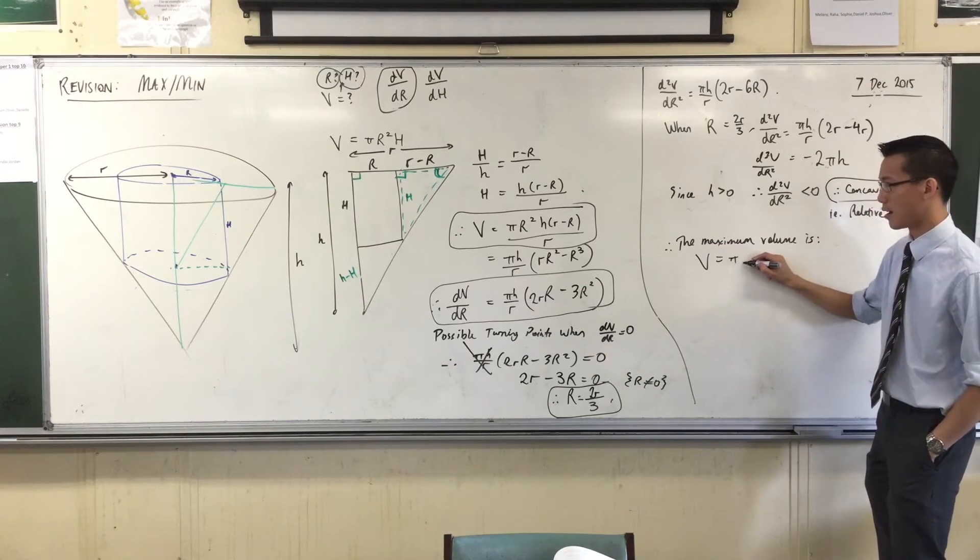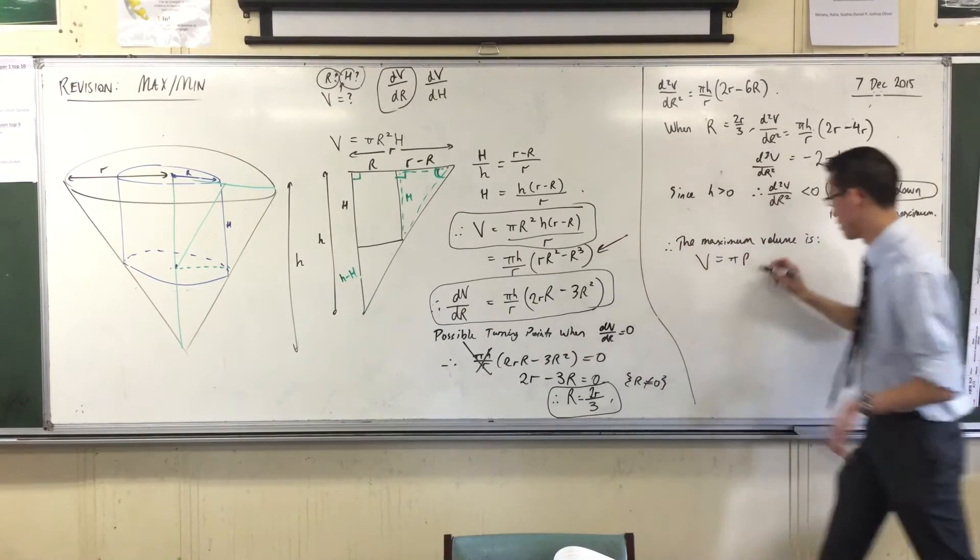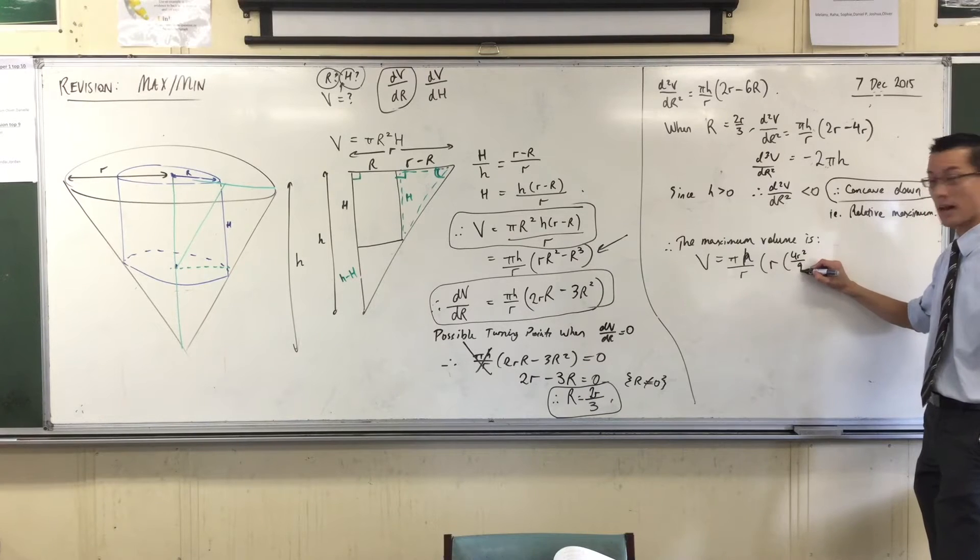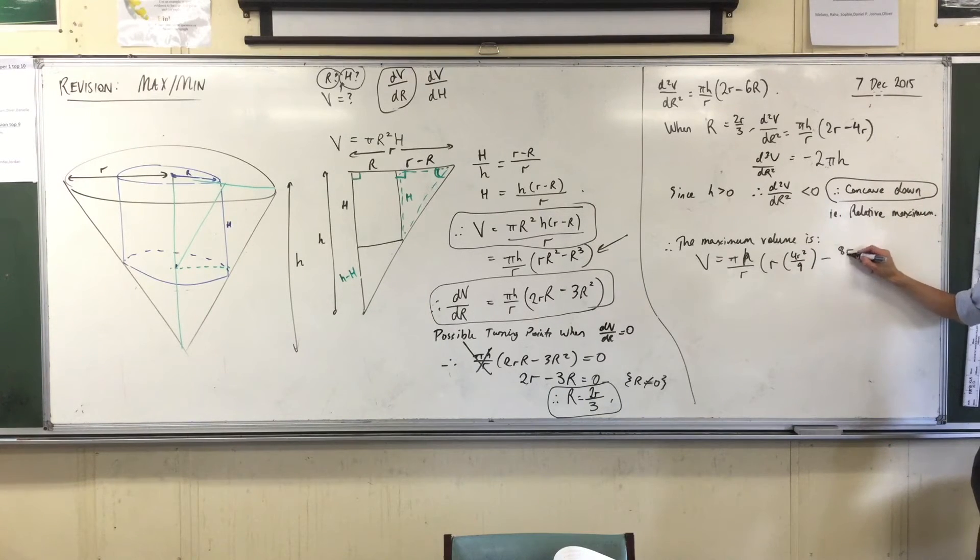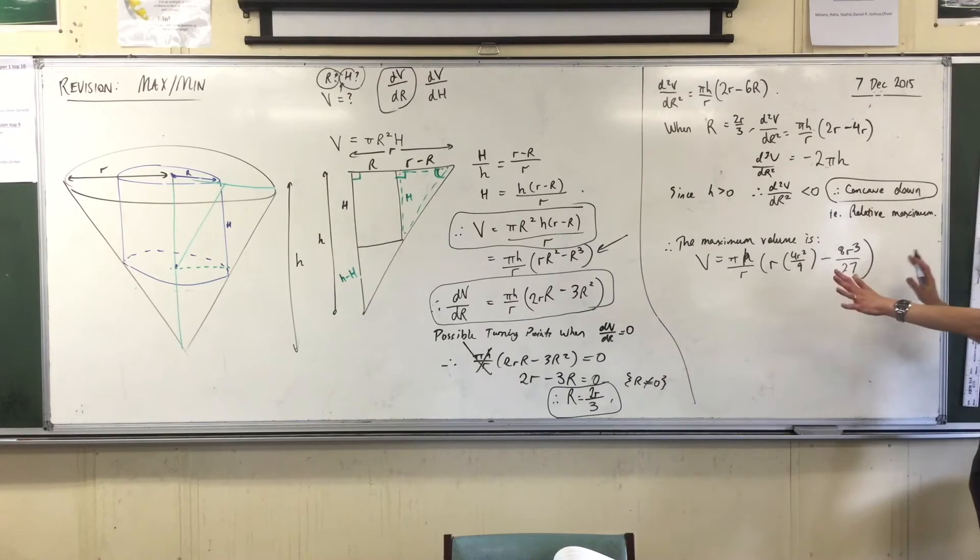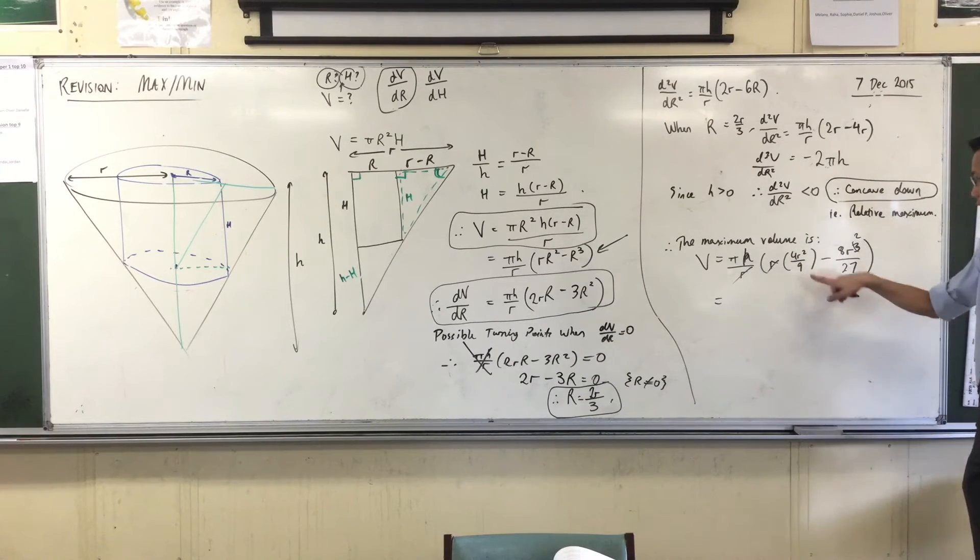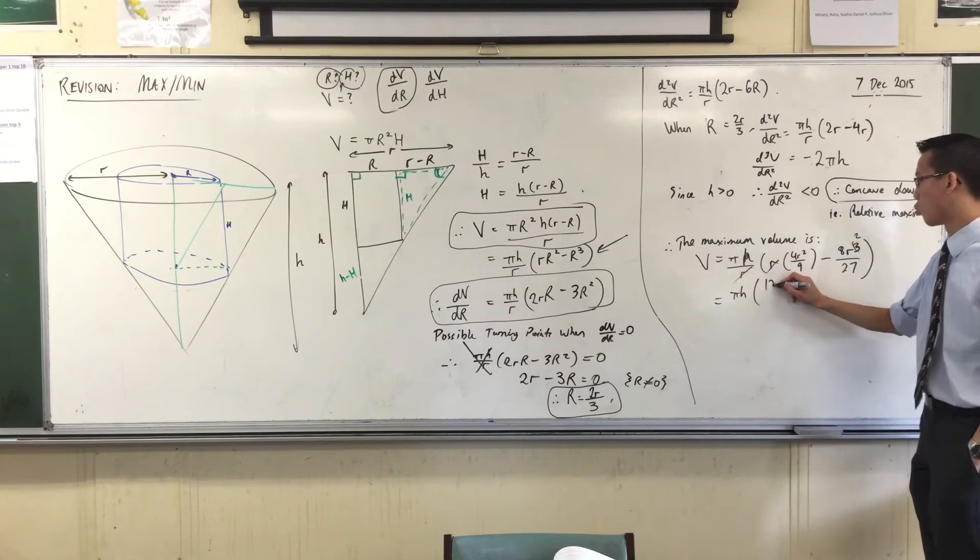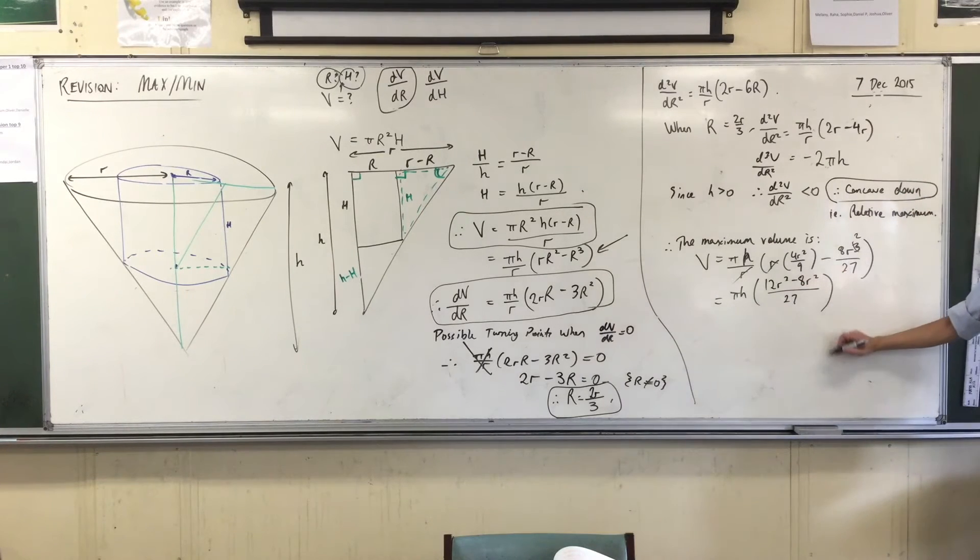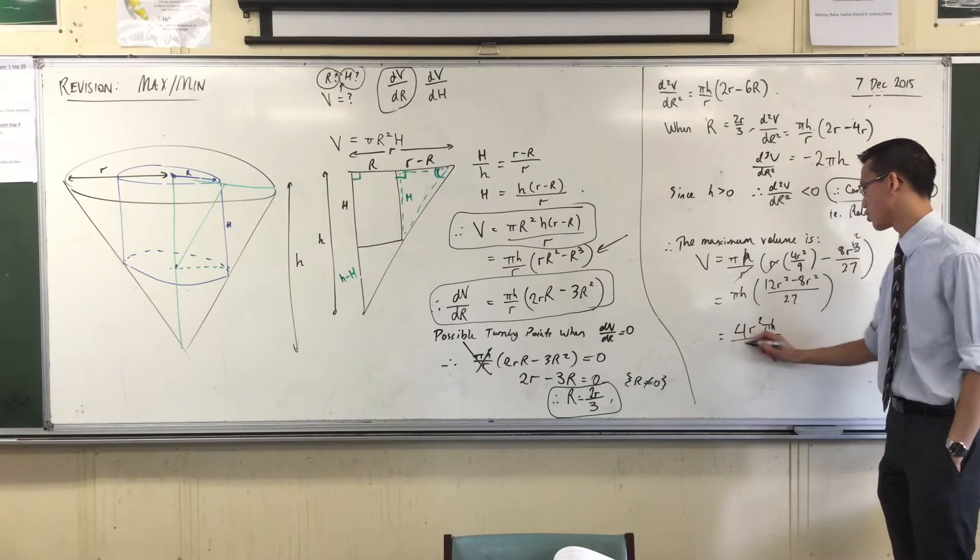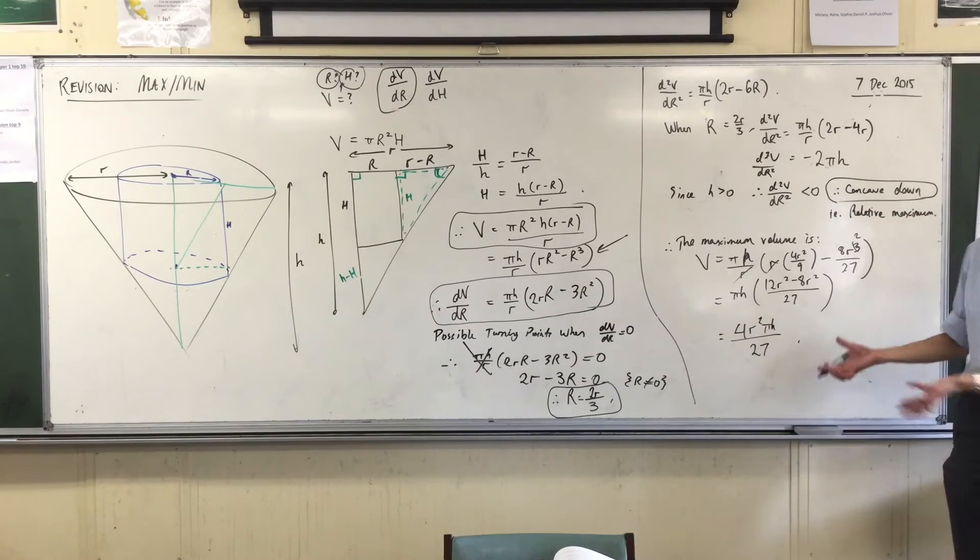V equals pi, I'm going to use this one here. Pi H on R, R times, what's R squared? It'll be 4 R squared on 9, okay with that. Take away, 8 R squared on 27. Cubed, of course it is. Cubed everything else except the R. Okay, good, that looks good. Let's tidy up a little bit. I'll lose this R, this R, and that'll become square. Be clear with that. It's all over, well, the common denominator, I guess I'm going to choose is 27, so this needs to multiply by 3. So I've got pi H times 12 R squared, take away 8 R squared, all over 27. Are you content with that? Does that look good? So 4 R squared pi H on 27, and don't forget, little R and little H are just numbers. So I'm done.